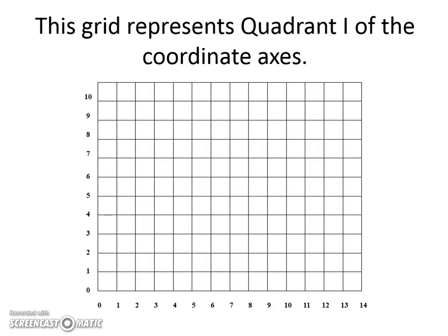So, right here, what you see, this grid, is quadrant one of the coordinate axes. And we're going to talk about all four eventually this year. But for now, we're just going to talk about, for this unit, plotting in quadrant one, where you'll see that all the numbers are positive.